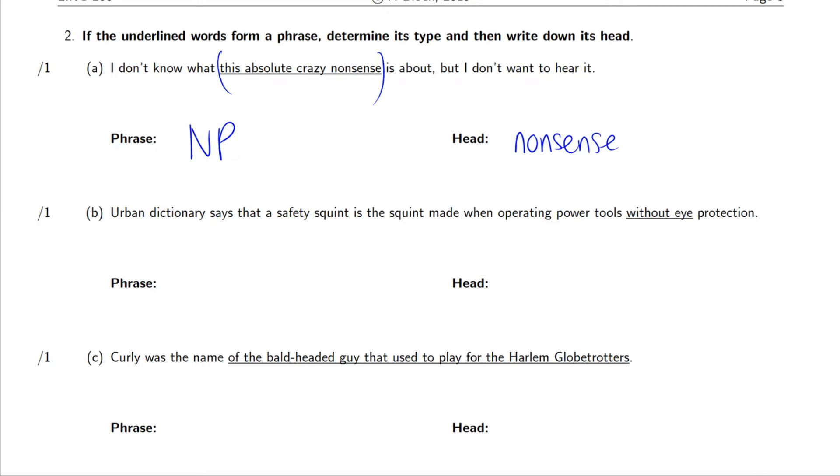And that tells us that this absolute crazy nonsense is a unit. Now, how do we determine the head? We have a demonstrative determiner, which is not going to be the head of any sort of phrase. Absolute crazy. Absolute is a qualifier modifying crazy with just an adjective. And of course, if we have a noun phrase, we're talking about nonsense here. So absolute crazy is just another phrase modifying nonsense. The most important word in this phrase is nonsense.